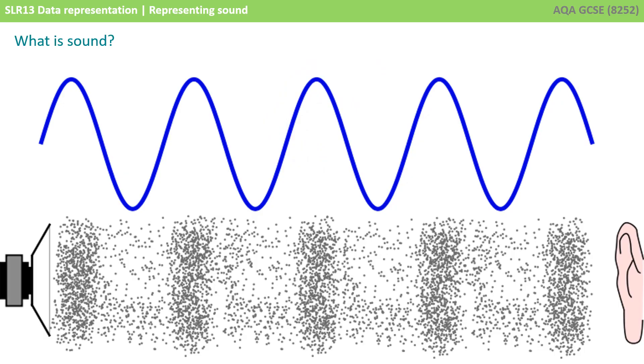Sound is a vibration that propagates as an audible wave of pressure through the air. In human physiology, sound is the reception of these waves and their perception by the brain. The sound waves are generated by a sound source, such as the vibrating diaphragm of a speaker, and detected by a microphone or the human ear.